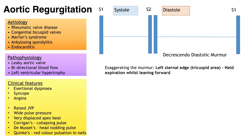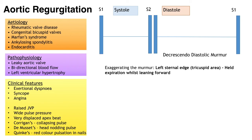Clinical features of acute aortic regurgitation include dyspnea, pallor, mottled extremities, rapid or faint peripheral pulses, basal lung crepitations, altered mental state, decreased urine output, cyanosis and tachypnea — they're looking pretty shocked.